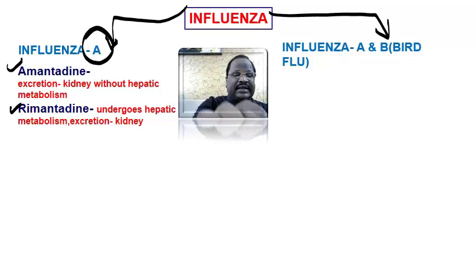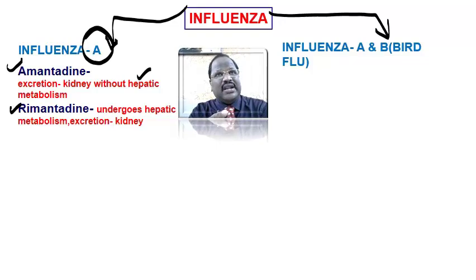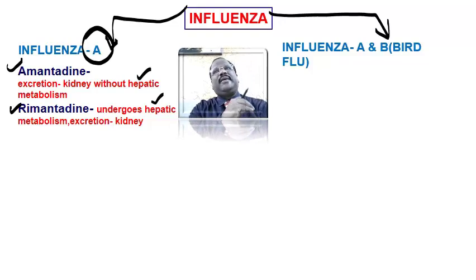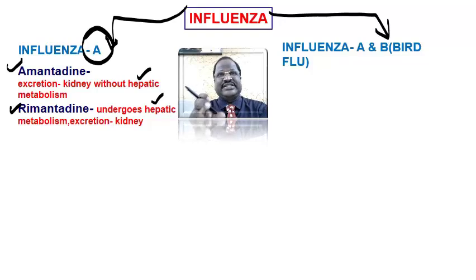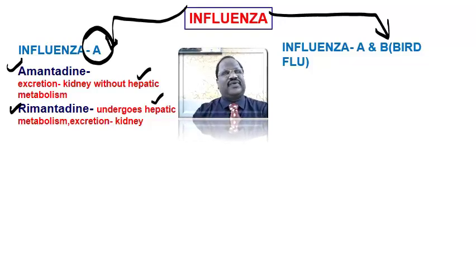Regarding kinetics of amantadine: it undergoes excretion through the kidney in unchanged form without hepatic metabolism. Whereas rimantadine maximally undergoes hepatic metabolism, and only a small amount of drug undergoes renal excretion in unchanged form — maximally only the metabolites are excreted. So amantadine totally depends upon kidney function for its excretion.